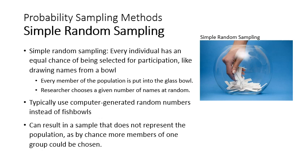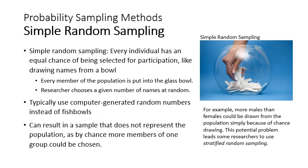A problem with simple random sampling is that it can result in a sample that doesn't represent the population — just by chance, more members of one group could be chosen, like flipping a coin and getting more heads than tails. For example, you might just by chance draw more males than females. This leads some researchers to use stratified random sampling if they want to make sure groups are proportional.